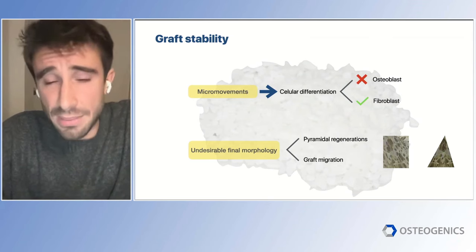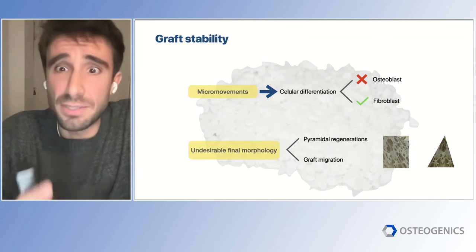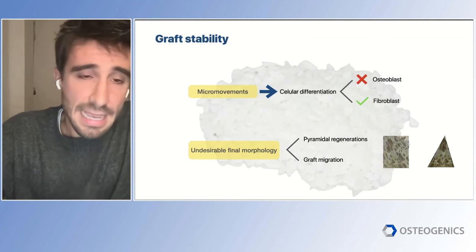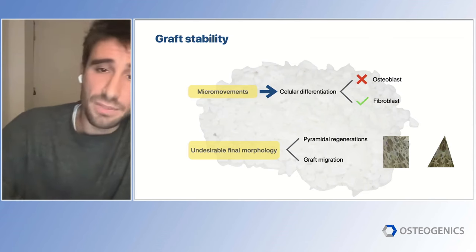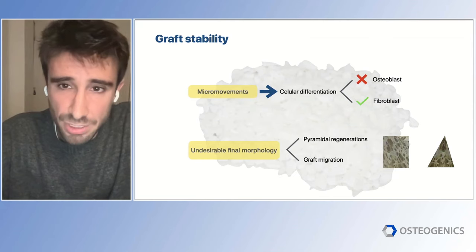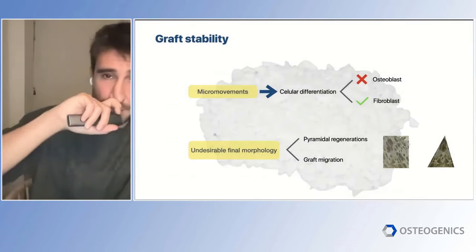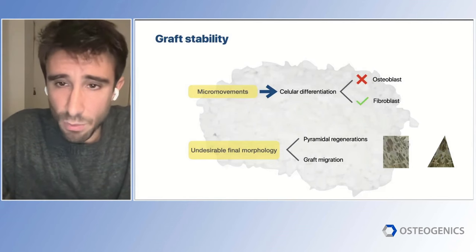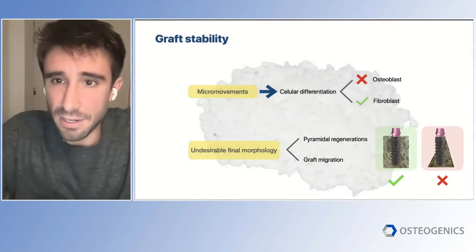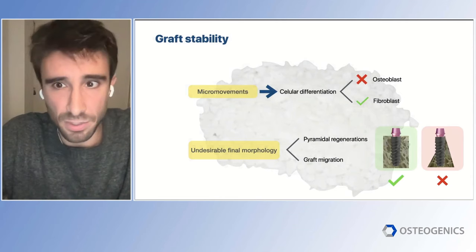Those mesenchymal cells, instead of differentiating into osteoblasts, are going to differentiate into fibroblasts. At re-entry, instead of finding nice bone formation, we are going to find some degree of encapsulation of our biomaterial in soft tissue. Also, when we don't have enough graft stability, the final morphology of our crest is going to be affected. Our objective when building up bone in GBR procedures is to create a rectangular-shaped crest. Without enough graft stability, there will be migration from the crestal part to a more apical position, leaving a lack of bone width at the most critical crestal part.